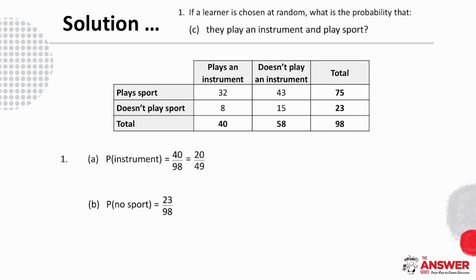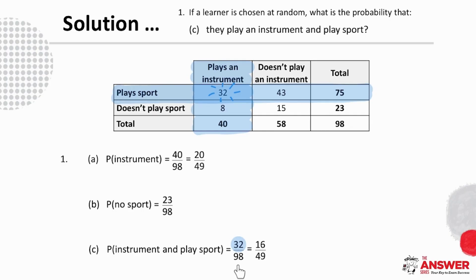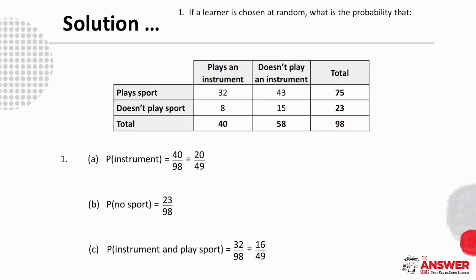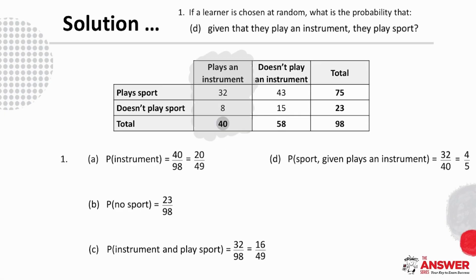For C, the probability of playing an instrument and sport: we can see where these two parts of information — plays an instrument and plays sport — meet. So we can say that the probability is 32 over 98, which simplifies to 16 over 49. For D, the probability of playing sport given that they play an instrument: here we can only consider the learners who play an instrument, so the probability is 32 over 40, which simplifies to four-fifths.